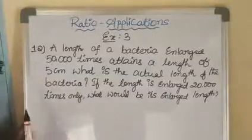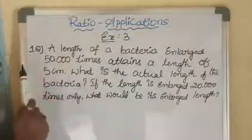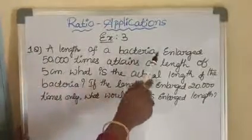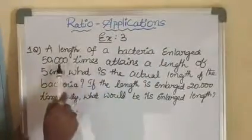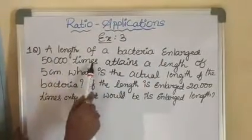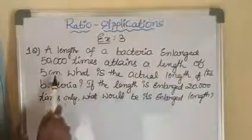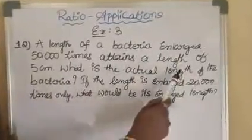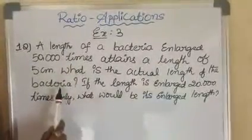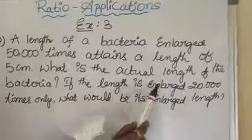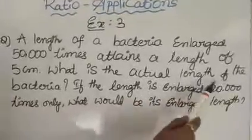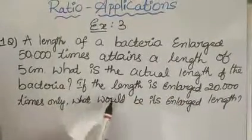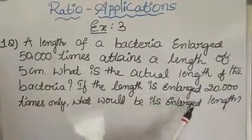Let's see Exercise 3, first problem. A length of a bacteria enlarged 50,000 times attains a length of 5 cm. What is the actual length of the bacteria? If the length is enlarged 20,000 times only, what would be its enlarged length?